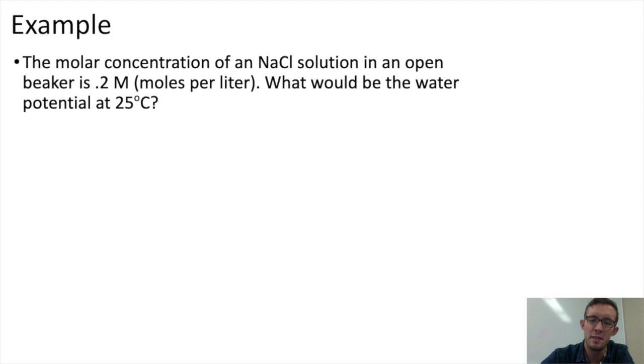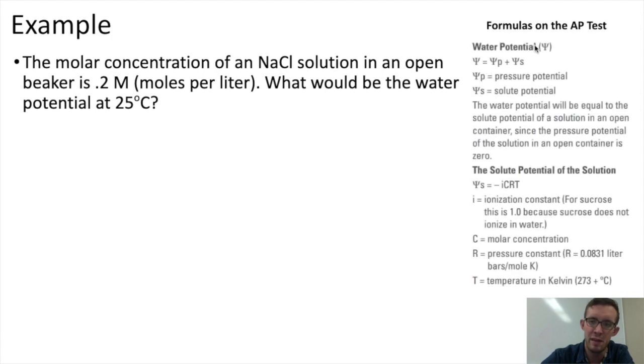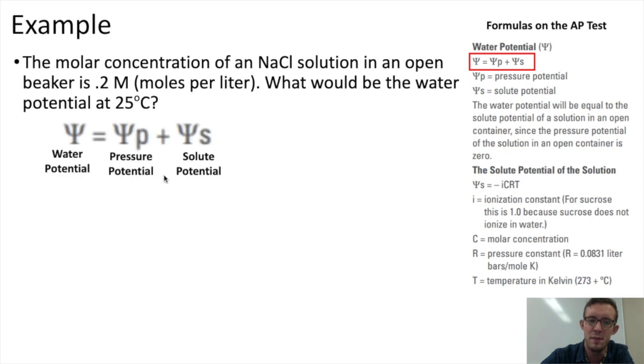Well, if I were an AP bio student looking to solve this problem, the first thing I would do is find the water potential formulas on the AP bio test. This will be near the front of the exam. I'd remind myself that if I want to know the water potential of something, I need to know two separate things: the pressure potential and the solute potential. The AP bio test will tell me that the pressure potential in an open container is equal to 0. So I could sub in 0 for pressure potential, and all I need to find now is the solute potential.